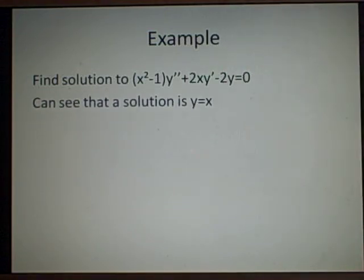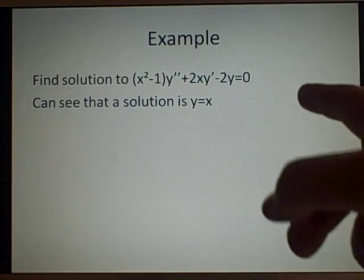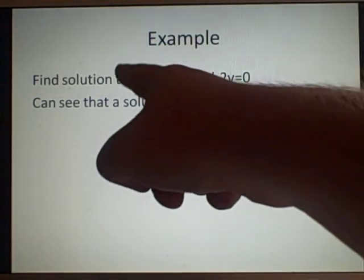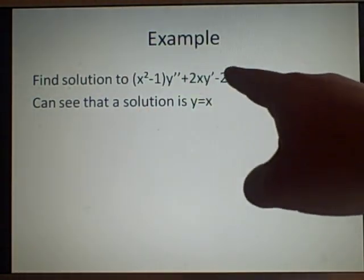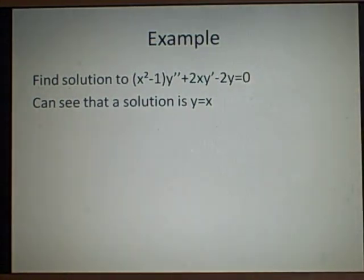If we differentiate it, we get 1, differentiate it, we get 0. So this is all 0, this is all 1, and this is all x, so it's 2x minus 2x equals 0. So that's right.